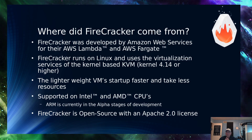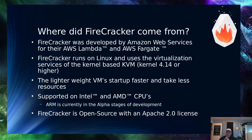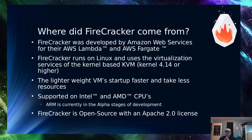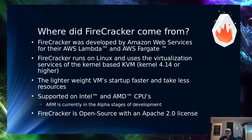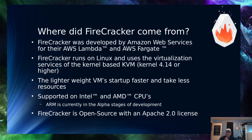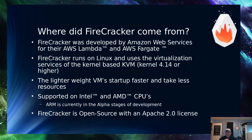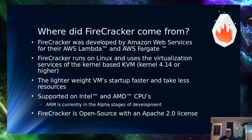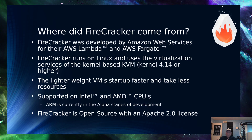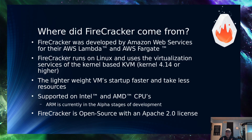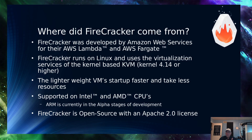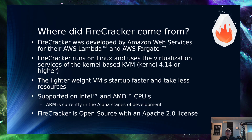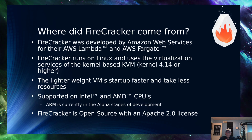So where did Firecracker come from? It was developed by Amazon Web Services, originally for AWS Lambda and their Fargate technologies. It runs on Linux and it is open source — it's been spun out to the open source community, and there's a GitHub page we'll look at in a bit. As long as you have Linux KVM installed and kernel 4.14 or higher, you're good to go. The lighter-weight VMs start up faster and take fewer resources. It is supported on Intel and AMD today — ARM is currently in alpha state. It is based on an Apache 2 license, so it's free for you to install and play with.